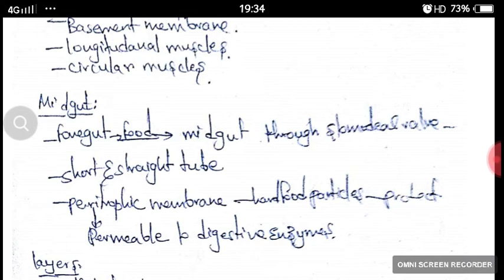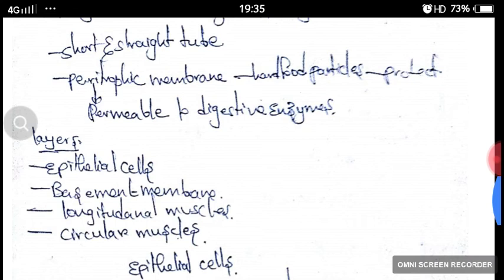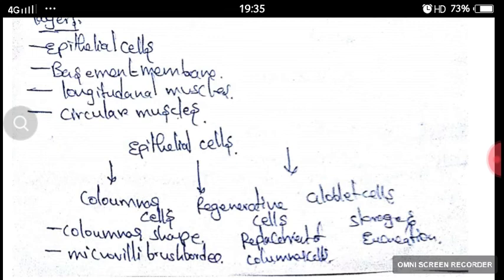The midgut consists of layers like epithelial cells, basement membrane, longitudinal muscles, and circular muscles. The epithelial cells again consist of columnar cells, regenerative cells, and goblet cells. Columnar cells are columnar in shape and consist of a microvillate brush border. Regenerative cells help in the replacement of columnar cells. Goblet cells help in storage and excretion.